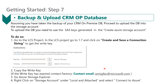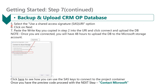Once you have a valid key, go to Azure Storage Explorer, right-click on the storage account under Local and Attached, and select Connect to Azure. Select the Use a Shared Access Signature (SAS) URI option, click Next, paste the right key you copied into the URI, and click Connect to upload the database. Once connected, you only have 48 hours to upload the database to the Microsoft storage account.